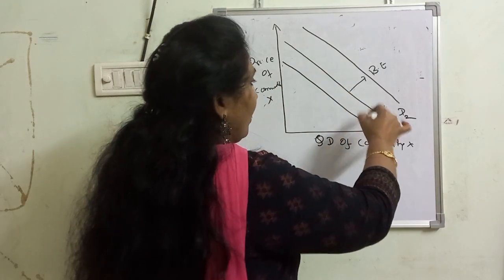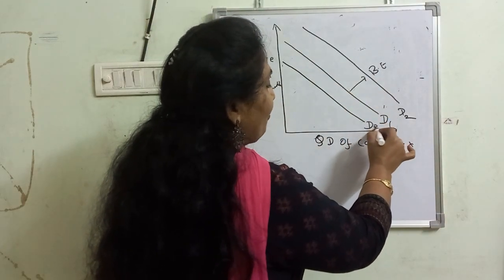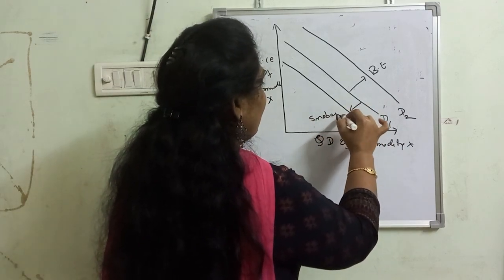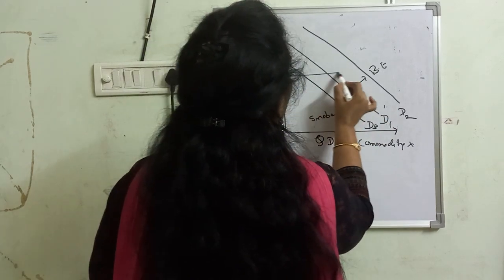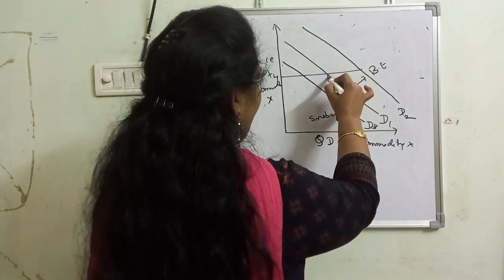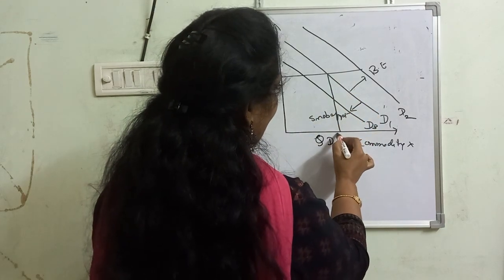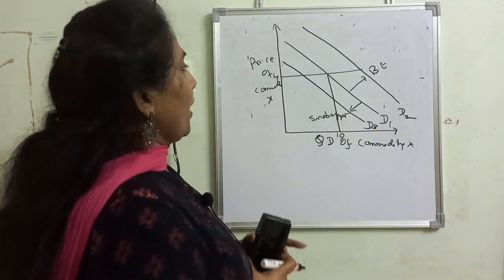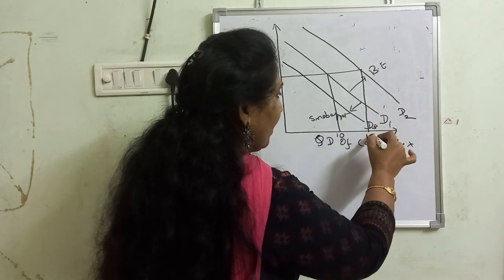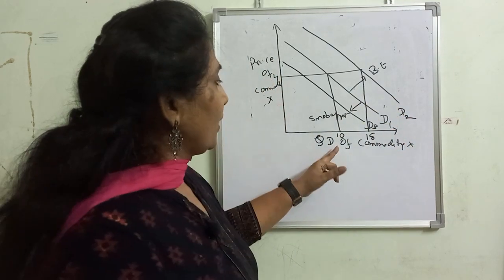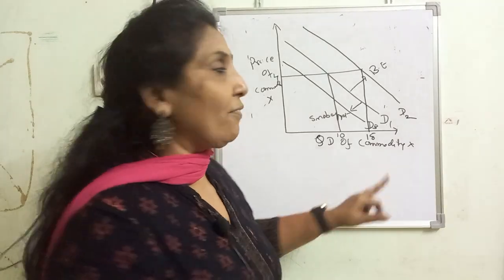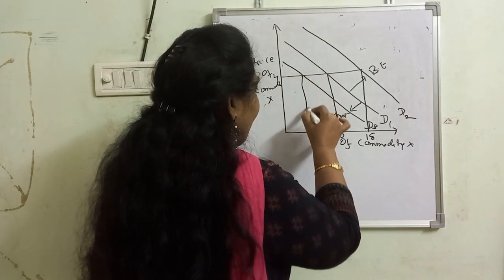Market demand goes down because of negative influence, which is the snob effect, shifting to a lower demand curve. For example, at a price of 4 rupees: if there is no influence between consumers, the market demand is 10 units. With positive influence or bandwagon effect, the market demand goes up to 15 units. With snob effect, the market demand falls to 5 units.